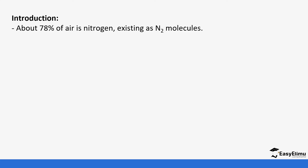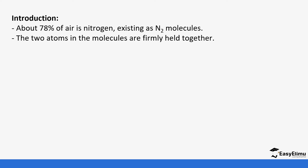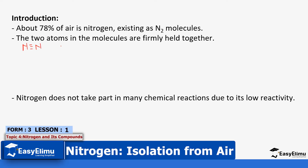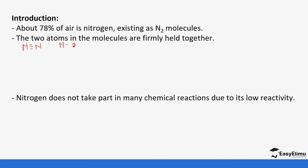First of all, nitrogen is about 78% of the atmosphere — it is the highest percentage gas in the atmosphere. The atoms in the molecule are firmly held by a triple bond. Nitrogen has atomic number 7 with electron configuration 2.5, and when we draw the molecule it looks like this.